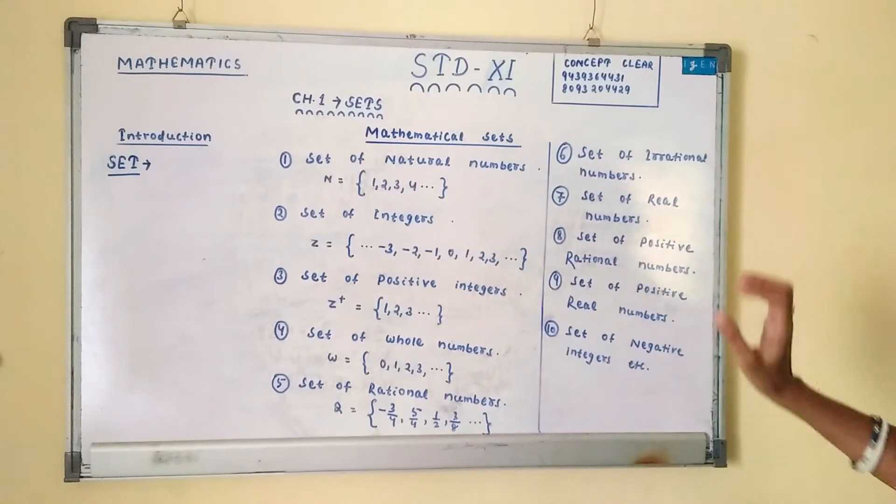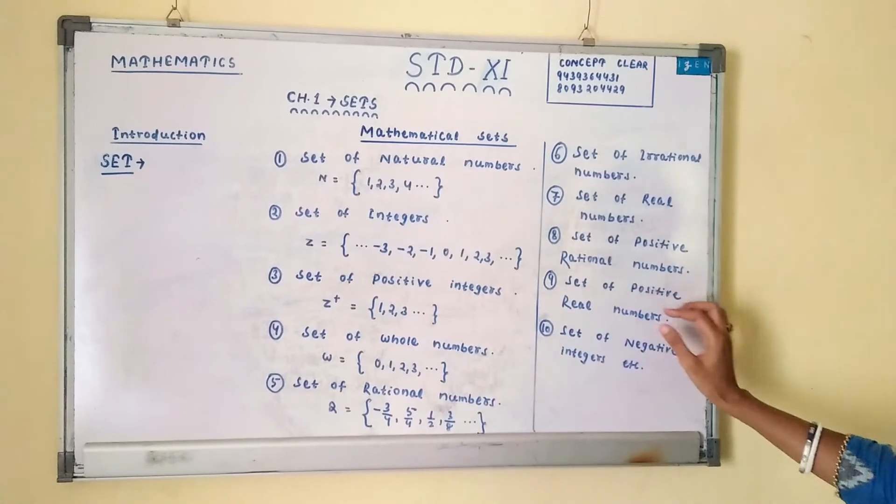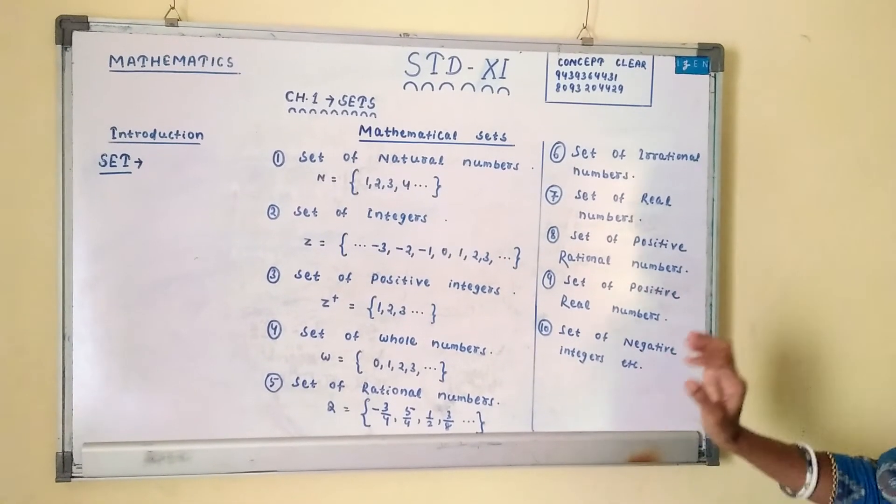Set of irrational numbers, set of real numbers, set of positive rational numbers, set of positive real numbers, set of negative integers, etc.